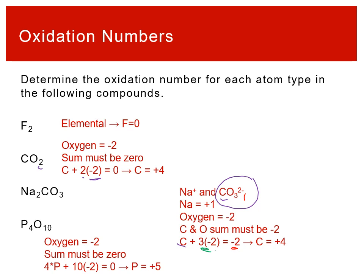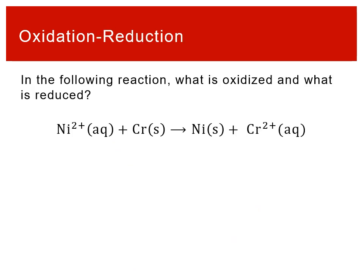Oxidation numbers can be any value as long as they balance the total charge. Now that we know how to assign them, we can apply them to identify redox reactions — determining what is oxidized and what is reduced. The process always starts with assigning oxidation numbers to each atom type on both sides of the reaction.